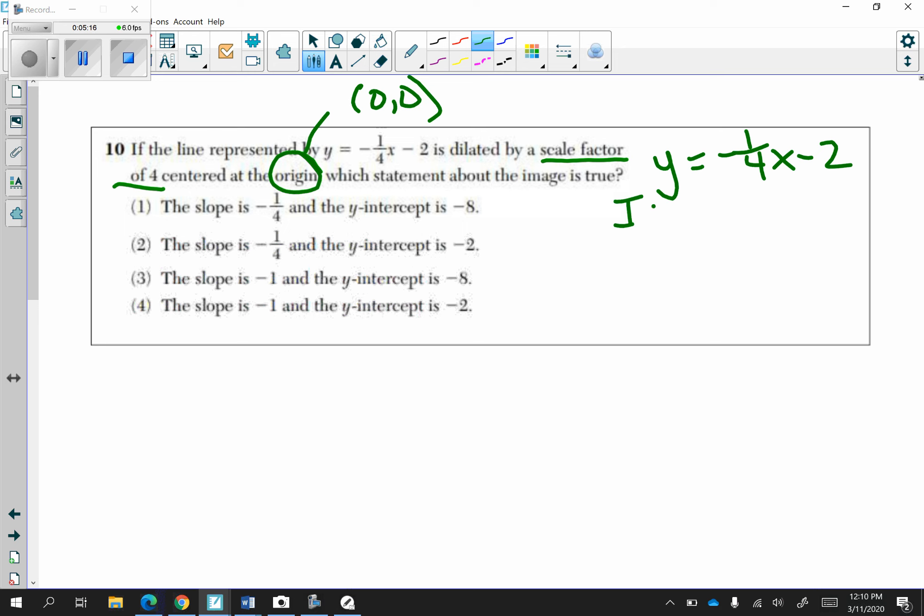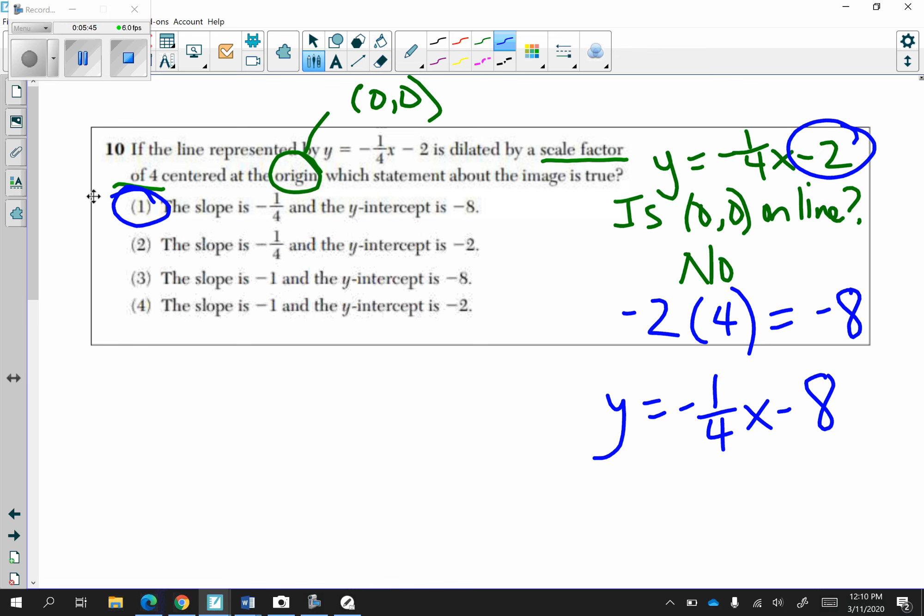Is 0, 0 on the line? No. So all you have to do is multiply the b value, which is the negative 2, by the scale factor, which is 4, to get negative 8. So remember, the slope stays the same. So negative one-fourth x minus 8 is your new equation. Negative 8 is your y-intercept. Negative one-fourth is your slope.